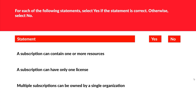The next question: for each statement, select yes or no. First: a subscription can contain one or more resources — yes, definitely. Second: a subscription can have only one license — no, a subscription can have multiple licenses; licenses can be assigned to each user account. Third: multiple subscriptions can be owned by a single organization — yes, this is obviously true; for example, scenarios such as development, UAT, and production subscriptions can all be owned by a single organization.